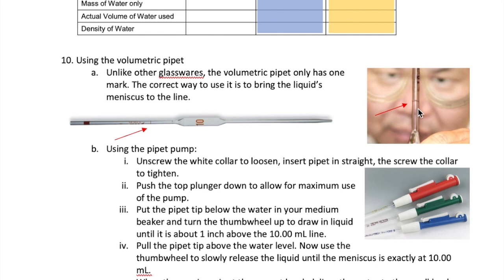To get water into the pipette, you're going to use a pipette pump, shown here in various colors. First, unscrew the collar of the pipette pump counterclockwise. Then insert the pipette into the collar and turn it clockwise to lock it. The pipette is now securely inside the pump and there's a tight seal that ensures the volume will be delivered correctly.